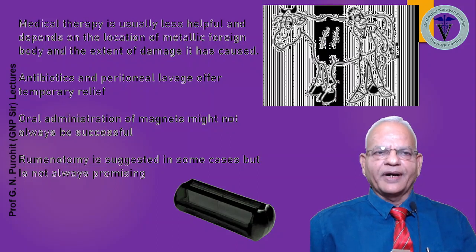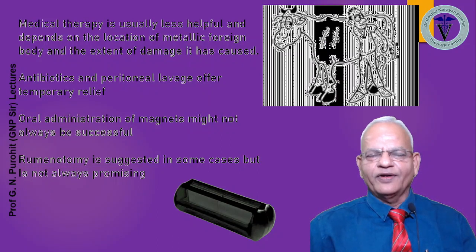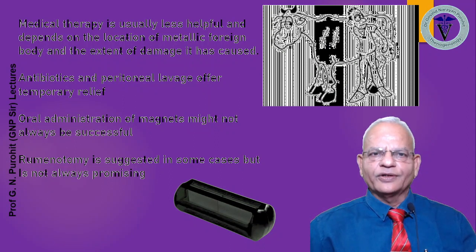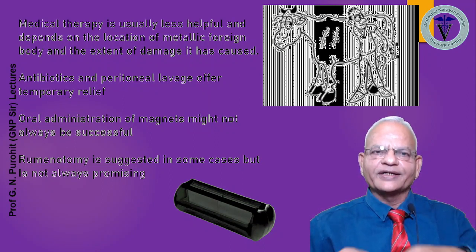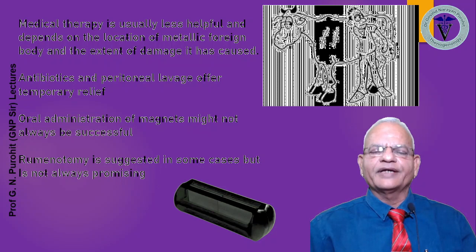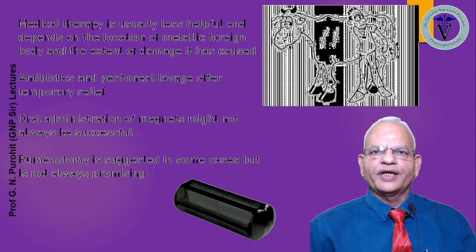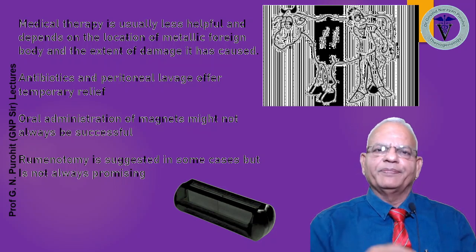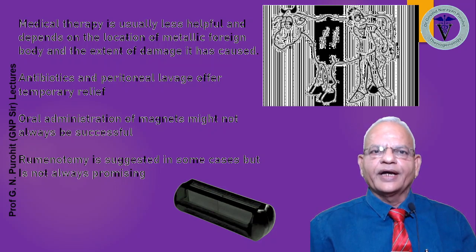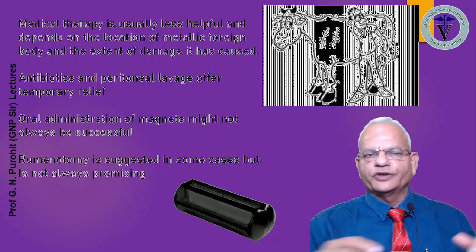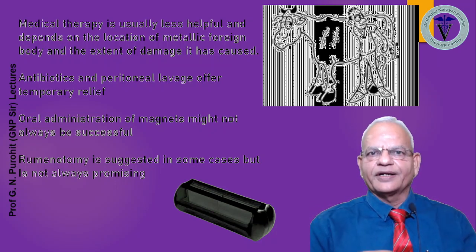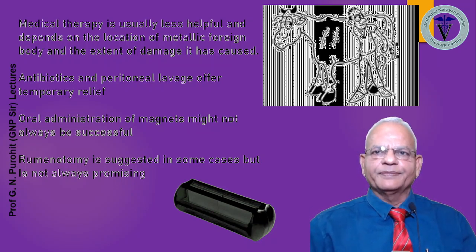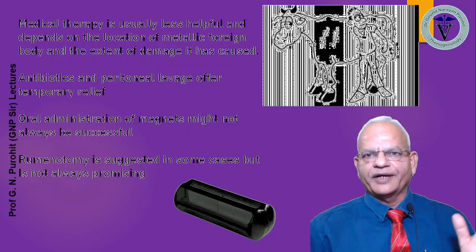Medical therapy is usually less helpful and depends on the location of the metallic foreign body and the extent of damage it has caused. Sometimes the foreign body remains in the reticulum, or it may pierce the reticulum causing peritonitis. Most of the times it enters into the pericardial sac, or the liver or the spleen, and symptoms of peritonitis might be present.